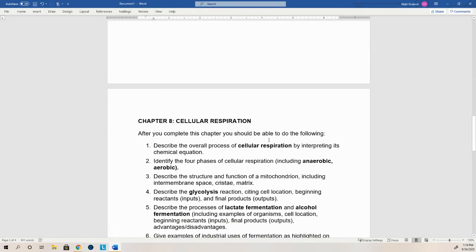So you should recognize the equation, what the inputs are, glucose and oxygen, and what the products are, carbon dioxide and water. And we convert 36 to 38 molecules of ADP plus P into 36 to 38 molecules of ATP in this process.